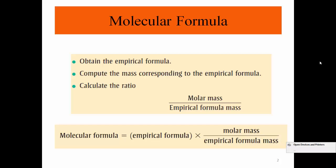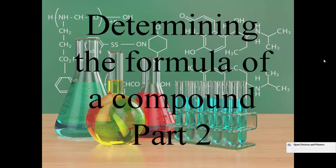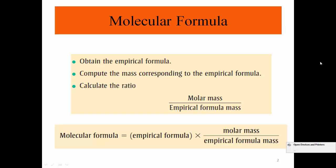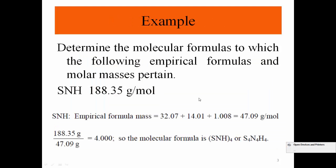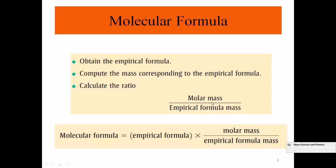In this video, I want to have more examples for determining the formula of a compound. That's the procedure we saw in the first part: we obtain the empirical formula, compute the mass corresponding to the empirical formula, calculate the ratio, and then the molecular formula becomes empirical formula times this ratio.